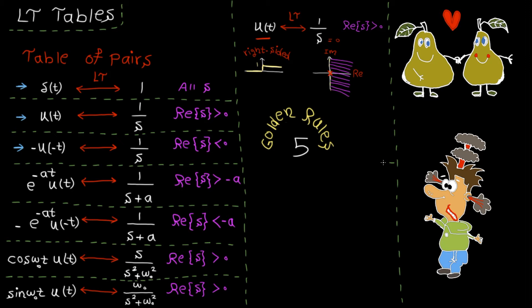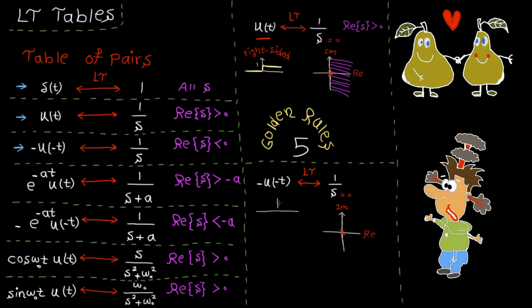Next signal is minus u(-t). The Laplace transform for this function is again 1 over s. There is only one pole at the origin. Now u(-t) is non-zero for t less than zero — the minus just flips the amplitude. The signal is left-sided as it starts from minus infinity and ends at zero. So the ROC is left-sided, i.e., on the left side of the pole.